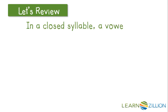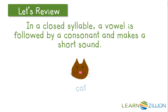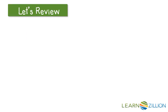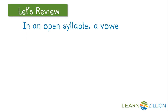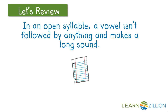In a closed syllable, a vowel is followed by a consonant and makes a short sound. So here we have the vowel A followed by the consonant T, so this is going to say a short sound: cat. And in an open syllable, a vowel isn't followed by anything and makes a long sound.